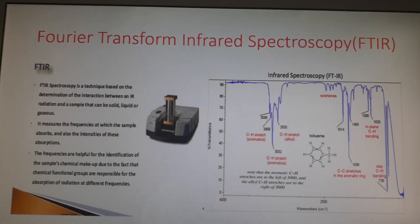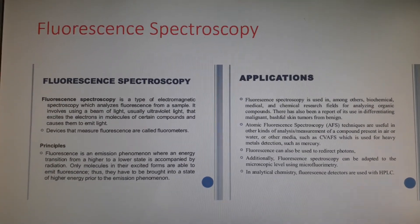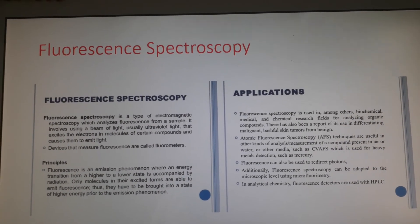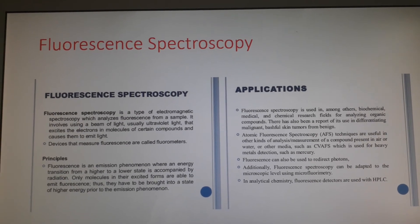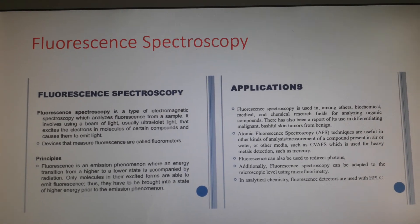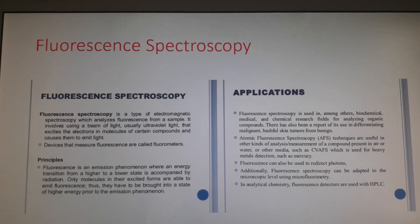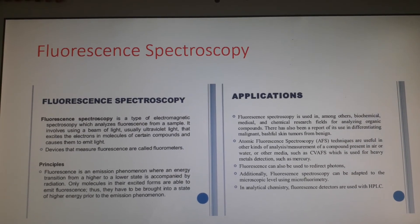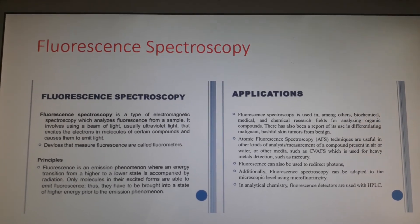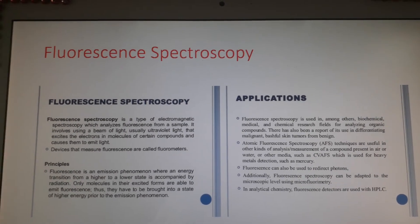The next technique is fluorescence spectroscopy. In fluorescence spectroscopy, if a beam of light is incident on certain substances, they emit radiation. Such a phenomenon is known as fluorescence, and this phenomenon is instantaneous — it starts after the absorption of light and stops when the incident light is cut off. Substances showing fluorescence are called fluorescent substances. As only a few substances exhibit fluorescence, it is a valuable tool for analytical chemistry.